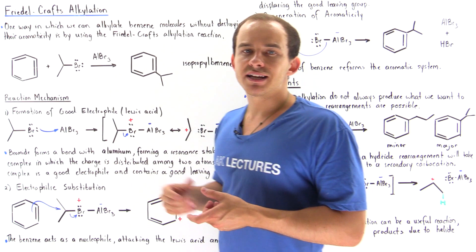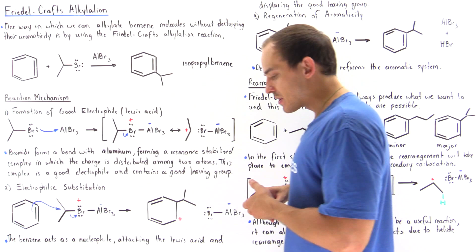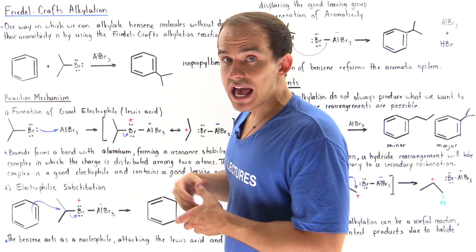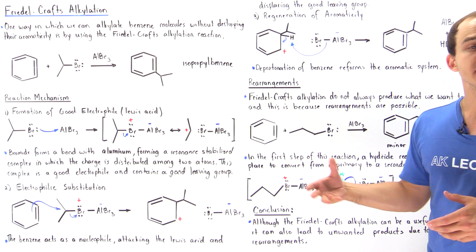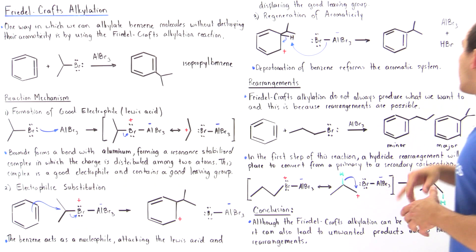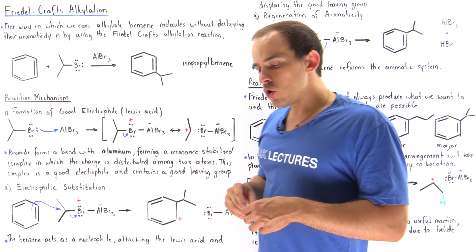In this lecture, we're going to study the reaction mechanism of the Friedel-Crafts alkylation of benzene. The mechanism is broken down into three steps: step one is the formation of our good Lewis acid — our good electrophile; step two is the electrophilic substitution of the benzene ring; and step three is the reformation and regeneration of aromaticity as well as of our catalyst.